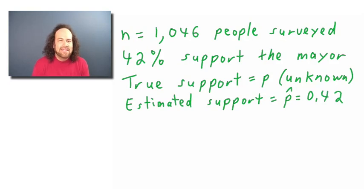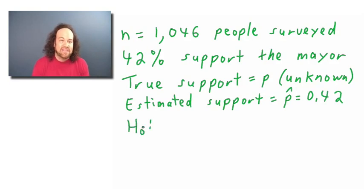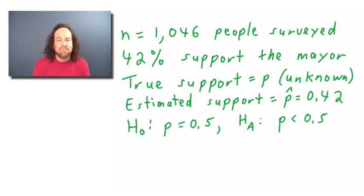We want to test as a hypothesis whether the true probability p of people supporting the mayor is indeed less than 50%. So we set up the null hypothesis H0 that actually half the people support the mayor, versus the alternative hypothesis that actually less than half of the people support the mayor.